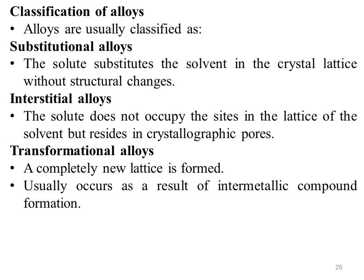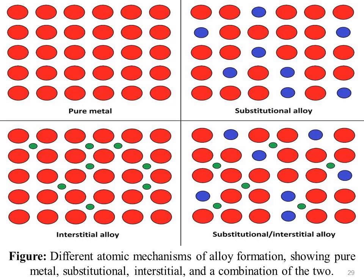Classification of alloys: alloys are usually classified as substitutional alloys, where the solute substitutes the solvent in the crystal lattice without structure changes; interstitial alloys, where the solute does not occupy a lattice site of the solvent but resides in crystallographic pores; and transformational alloys, where a completely new lattice is formed, usually as a result of intermetallic compound formation. Different atomic mechanisms of alloy formation show pure metal, substitutional alloy, interstitial alloy, and a combination of substitutional and interstitial alloy.